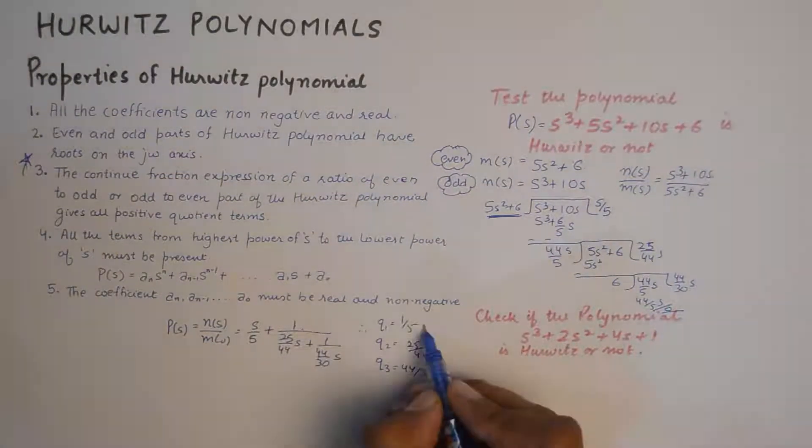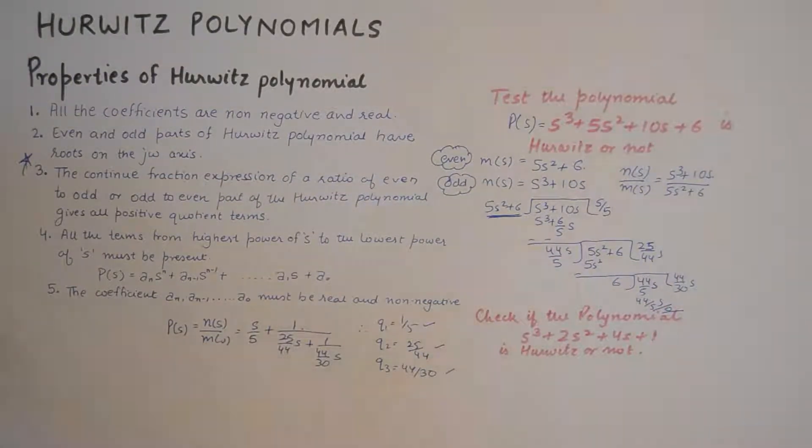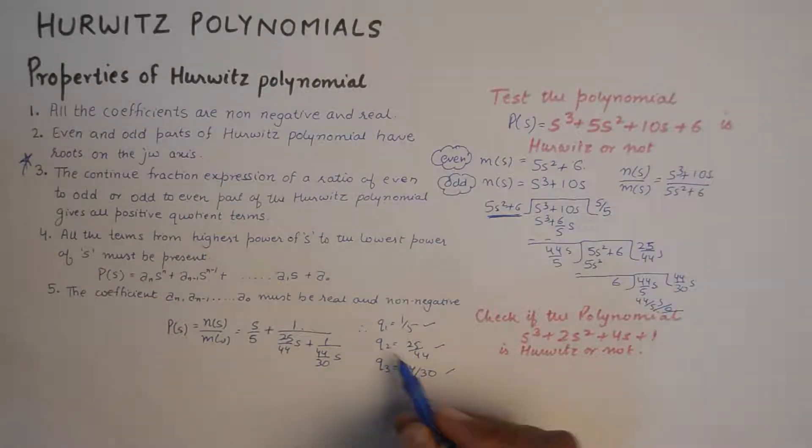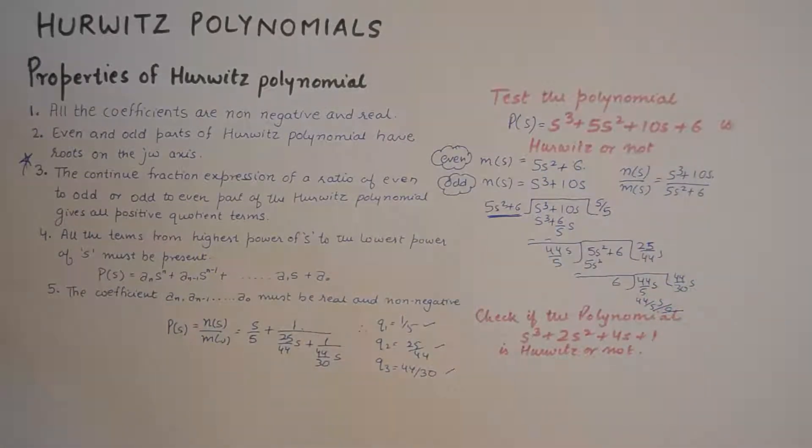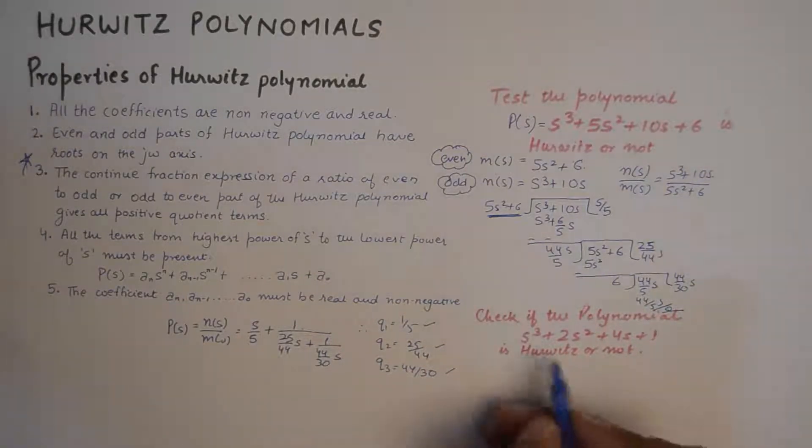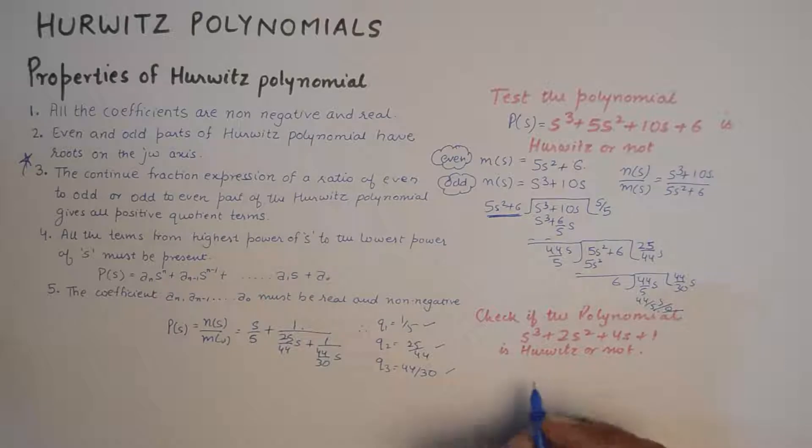And with these positive quotients you can deduce that the polynomial is Hurwitz. And the total number of quotients is equal to the highest degree of s in the given polynomial. So we've got three quotients and the highest degree is three, so that confirms that the polynomial is Hurwitz. And similarly, let's try and solve one more question, s cubed, on the similar lines.